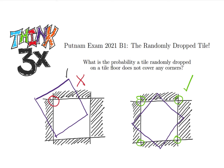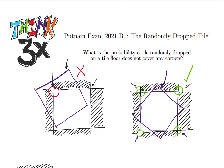So we're looking at this purple tile — we drop it from the sky and it's going to land somewhere on a tile floor. We need to make sure that when it lands, it doesn't cover any corners. Notice that the tile on the left is covering a corner here, but not this other one. What we want is for it to look like the tile on the right, where all four corners are still exposed and the tile is only covering some edges along the sides. That's our goal: find the probability that a randomly dropped tile doesn't touch any corners.